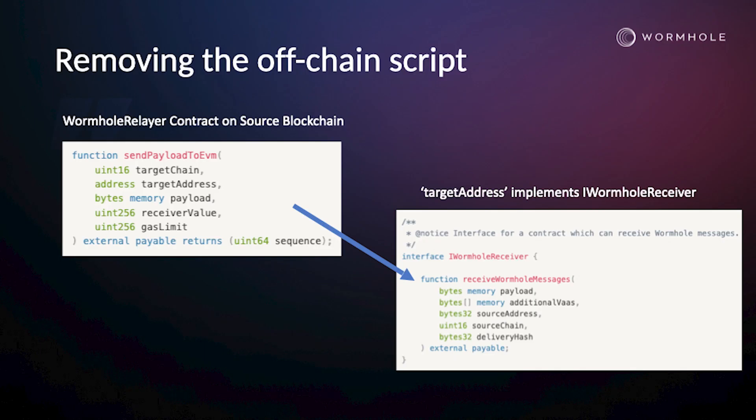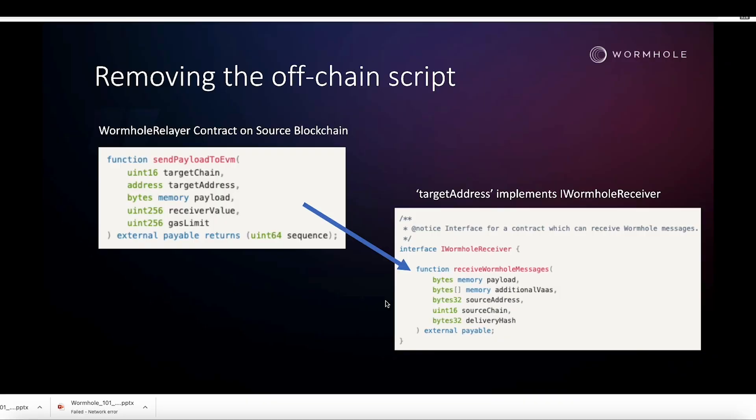How do you identify the target chain and the source chain? Is that a special code Wormhole has implemented? Yes, exactly. These are details that are in the interface file itself. It's a number that corresponds to the chain — for example, Avalanche is 6, Celo is 14, Ethereum is 2. There are different codes. Our goal, and how we're going to do it for the whole workshop, is to implement the send thing: send a payload on the source chain by calling send payload to EVM. Under the hood a message gets published, as well as instructions on how to deliver it. It gets signed by the 13 entities, brought to the specified target contract, which implements the iWormhole receiver interface. That's what we did in this step.